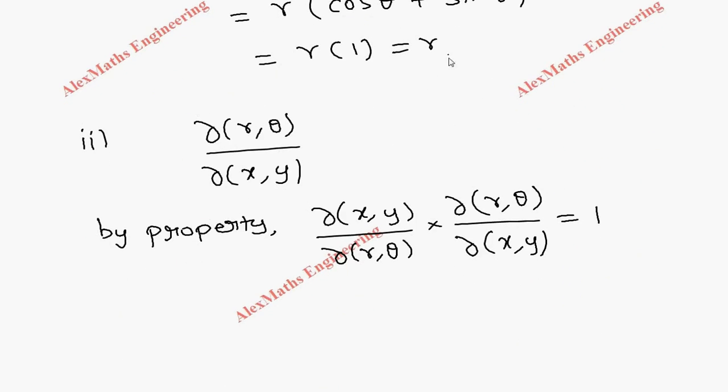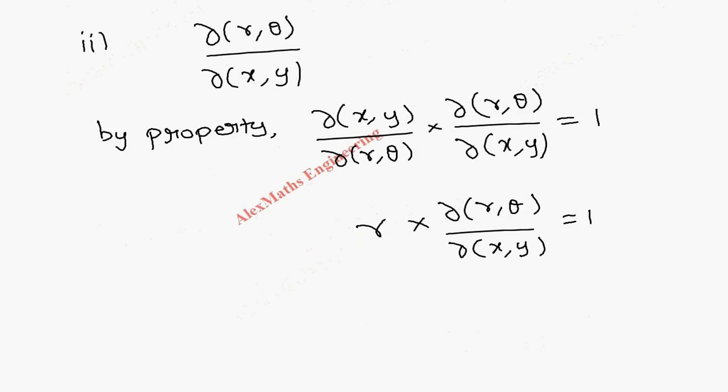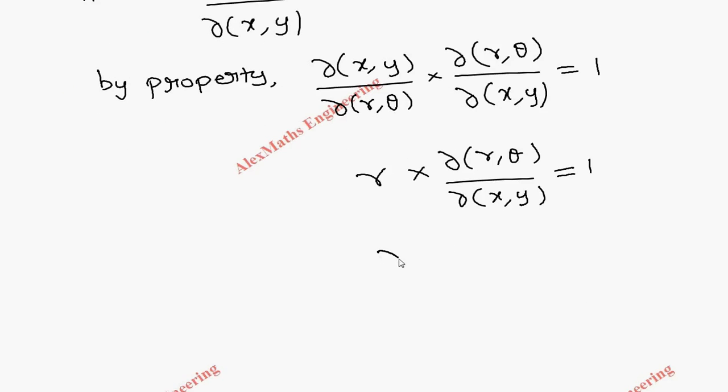its value is r, so we substitute r here: ∂(r,θ)/∂(x,y) = 1. From this, the value of ∂(r,θ)/∂(x,y) equals 1/r.